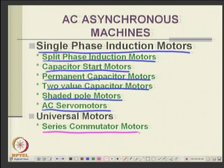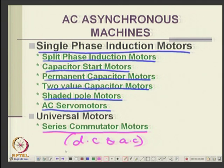The universal motor works on both DC and AC, which is why it is called a universal motor. It is essentially an AC series commutator motor. These are high-speed motors typically used in mixers, grinders, and drilling machines wherever high speed is needed. They are also used for electric traction — in Switzerland, universal motors are still used at low frequency, around 50/3 Hz.